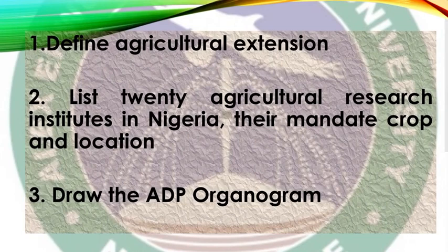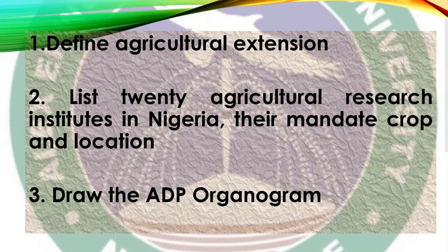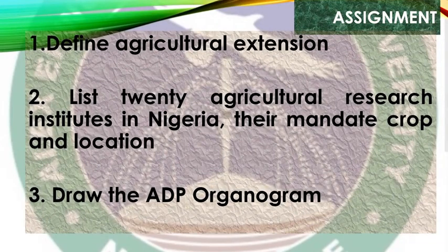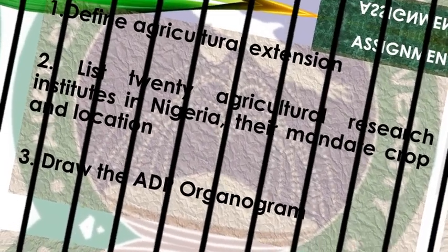Before we go, here are your personal assignments. First, define extension in your own words. Second, list at least 20 agricultural research institutes in Nigeria, stating their mandate, club, and location. Third, learn the ADP organogram — know the active participants in the ADP structure, what they do, and how they do it. The ADP forms a strong backbone for extension practices in Nigeria.